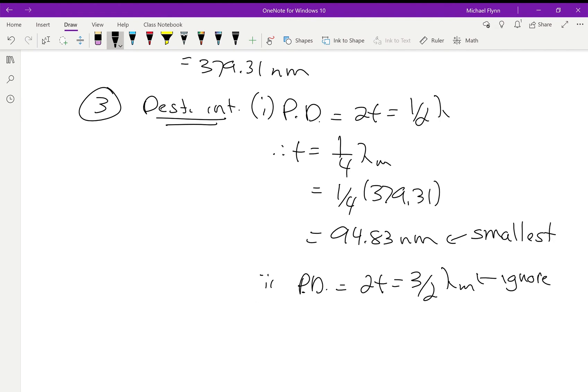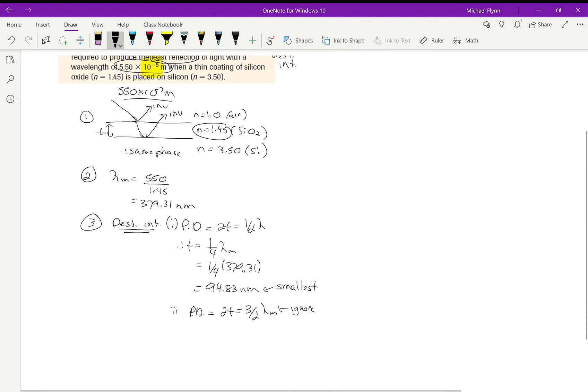All right. So, that's it for this one, guys. That's how you do a typical thin film, this case, anti-reflective coating problem. All right.